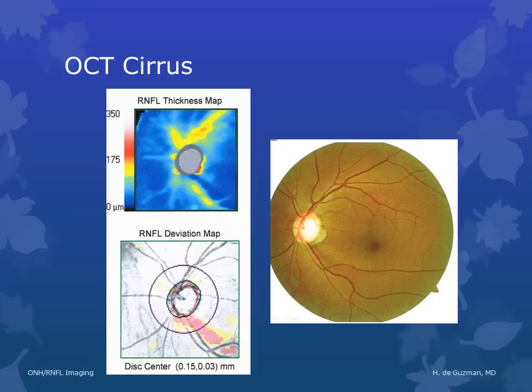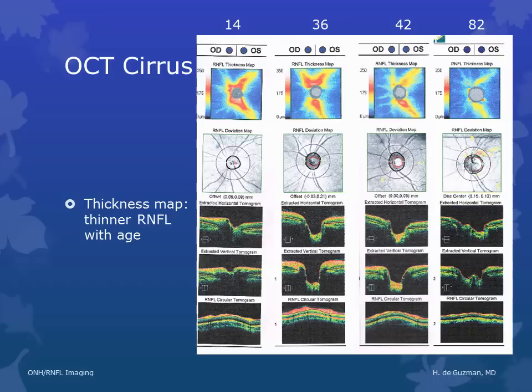This is an example of a focal RNFL defect that shows up well both on the deviation map and on the thickness map, and also correlates clinically with the RNFL photo showing an RNFL wedge defect in the same area. As you get used to looking at thickness maps, you will become familiar with what the normal thickness map looks like for different ages. Normally you should find a bifurcated area of hotter colors superior to the disc and one large area of very hot colors inferior to the disc, but this tends to get thinner as we grow older without necessarily being glaucomatous.